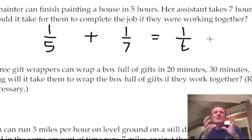Five hours, in one hour you would do a fifth of it. If somebody did it in seven hours, in one hour they would do a seventh of the job. So together if they worked, did the whole job in T hours, in one hour they'd do one over T part of the job. Now that's it, you've set up the equation.